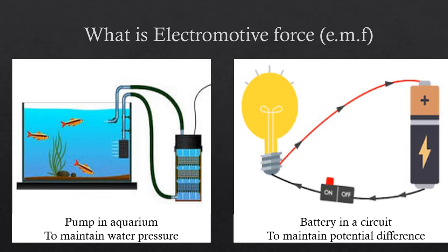And that is about EMF. So you understand the difference between EMF and potential difference. EMF is the source from the battery that provides the energy, while potential difference is on the electrical component. So that's all for today. Thank you very much.